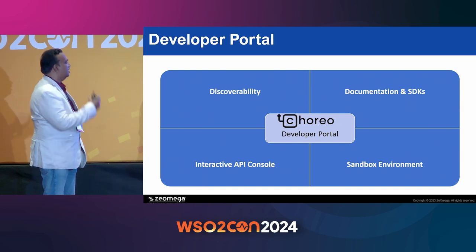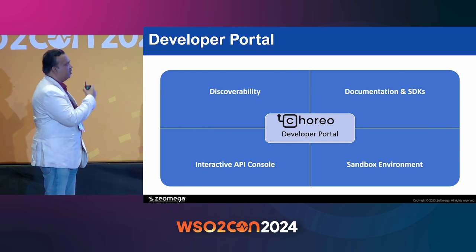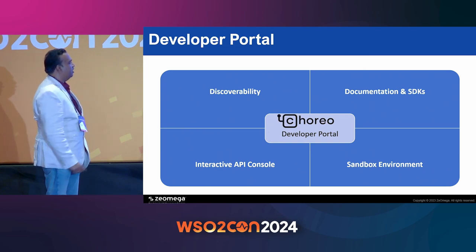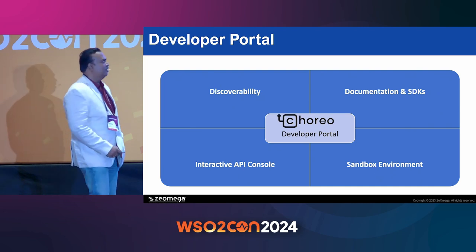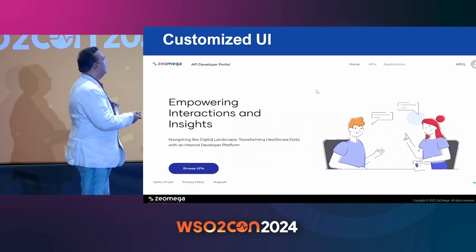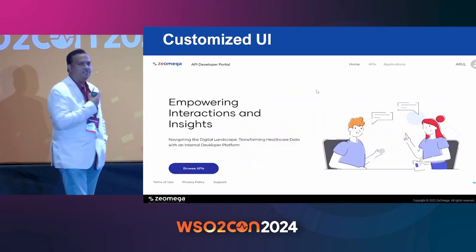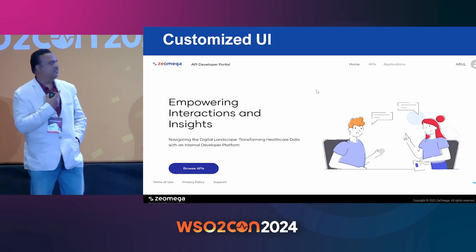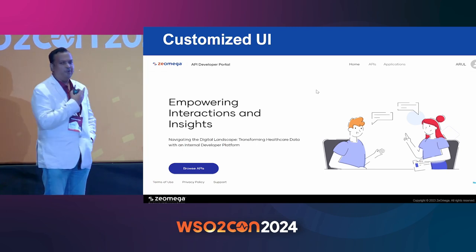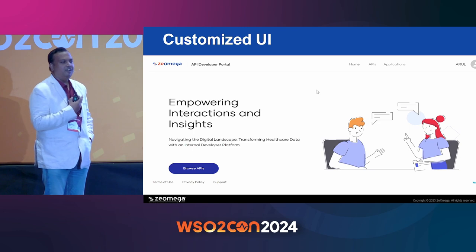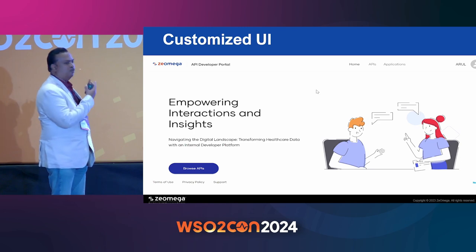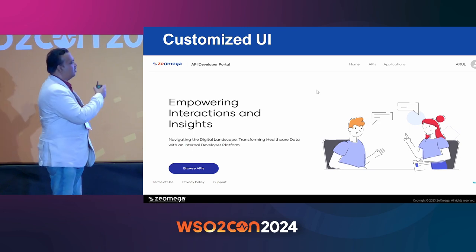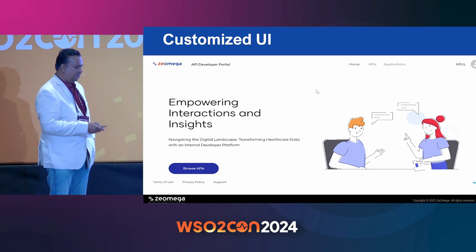The Choreo developer portal has options for a sandbox environment, documentation SDK, and an interactive API console. We adopted the WSO2 Choreo portal and were able to customize the UI. It looks like it's our own — a Z Omega developer portal — not obviously Choreo. We can do more customization, and this is how it looks with Choreo.